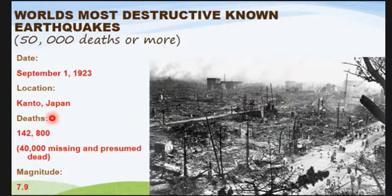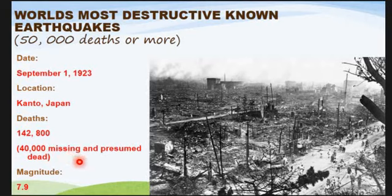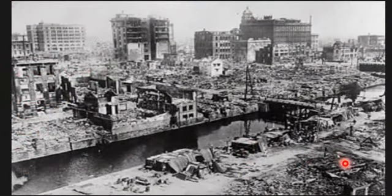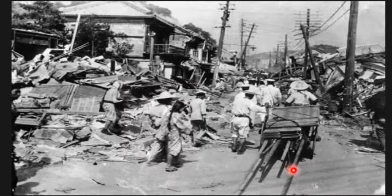In Kanto, Japan, an earthquake killed 142,800 people, with 40,000 missing — likely also dead. Although the magnitude was 7.9, the technology at the time was not advanced enough to mitigate the damage. Japanese buildings today have springs underneath to absorb the ground shaking, since earthquakes occur almost regularly in Japan.